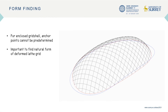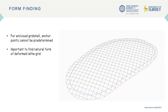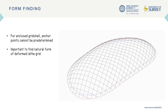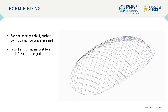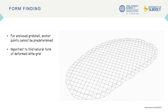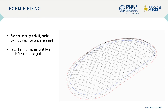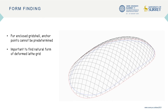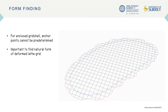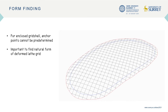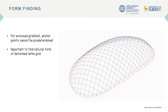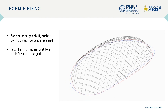However, our use of the grid shell as a dwelling structure required an enclosed form. Because of the high curvature of the small structure, the form had to be such that the timber lats would naturally bend to. Unlike the previous example, anchor points could not simply be moved to deform the grid, since these points could not be predetermined.